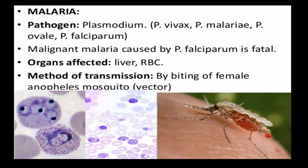In this video on human health and disease, we are going to learn about the diseases caused by protozoa: malaria and amoebiasis. Malaria is caused by the pathogen Plasmodium. The different species of Plasmodium are Plasmodium vivax, Plasmodium malariae, Plasmodium ovale, and Plasmodium falciparum. Of all these variants, malignant malaria is caused by Plasmodium falciparum.